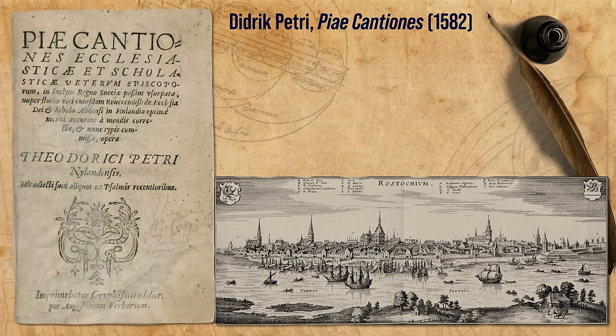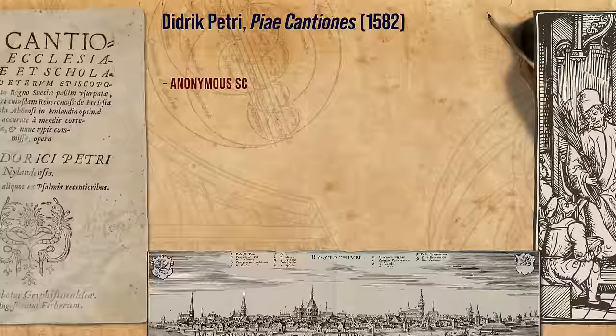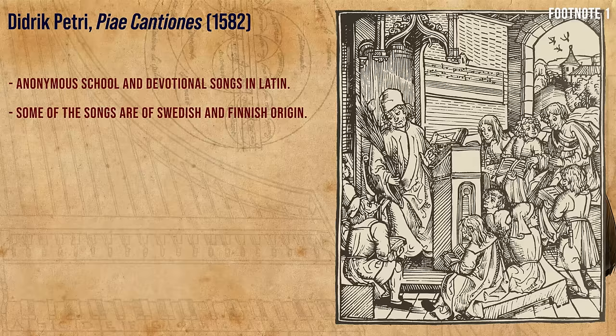Gaudete is found in a well-known collection from 1582, entitled Piae Cantiones, compiled by a Finnish student called Didrik Petri while he was studying in Rostock, Germany. It includes anonymous school and devotional songs in Latin. Some of the songs are of Swedish and Finnish origin, dating back to different periods, some as far back as the 11th century.